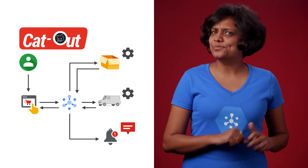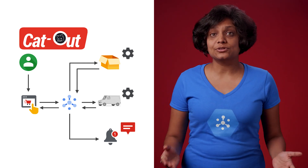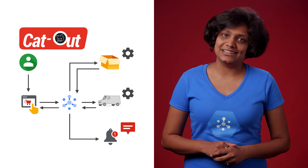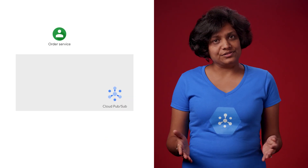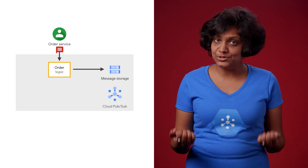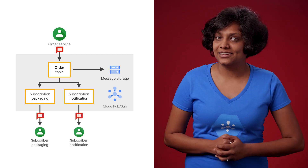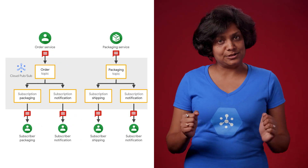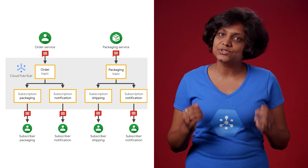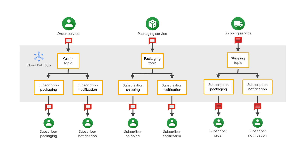Remember CatOut, the order processing and delivery service from the last episode? Let's see how Pub/Sub topics and subscriptions would be set up for this asynchronous functionality. The order service sends messages to a Pub/Sub topic where they get stored. The packaging and notification services subscribe to these messages through the respective Pub/Sub subscriptions in a fan-out fashion. The packaging service will send messages to a Pub/Sub topic, and the shipping and notification services will subscribe to the respective Pub/Sub subscription. Similarly, the shipping service will send messages to a Pub/Sub topic, and the order and notification services will subscribe to the respective Pub/Sub subscriptions.